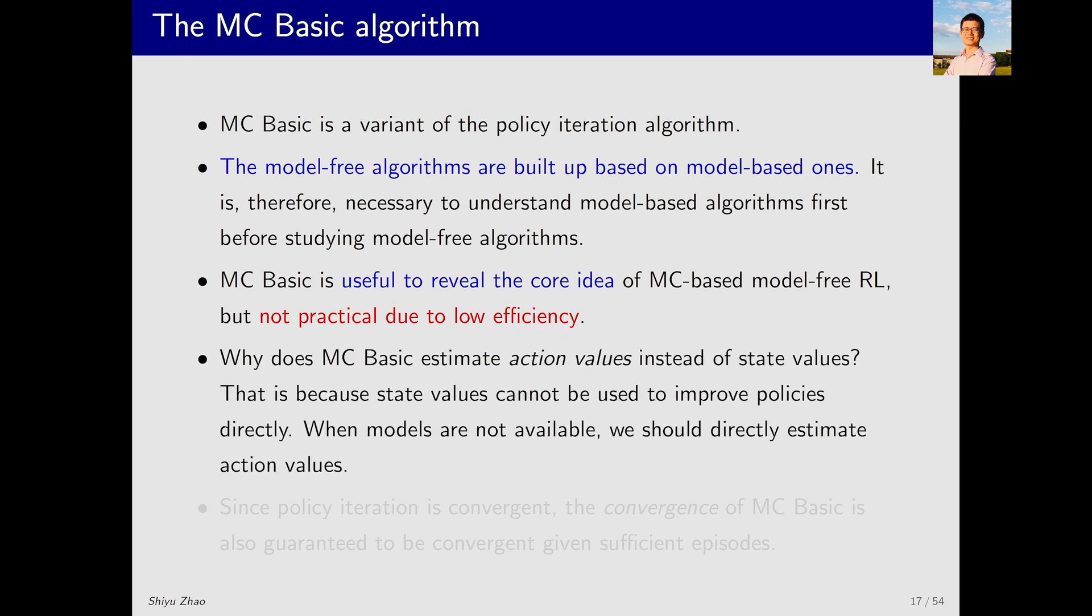Furthermore, in MCBasic you may have noticed that it directly estimates action values. By contrast, in policy iteration we first estimate state values and then calculate action values. Why do we directly estimate action values here? That is because state values cannot be used to improve policies directly. When models are not available, we should directly estimate action values.